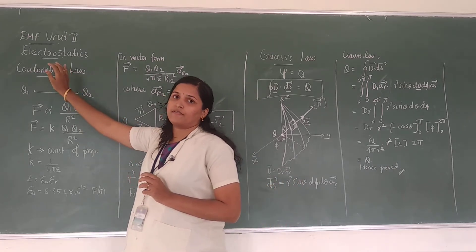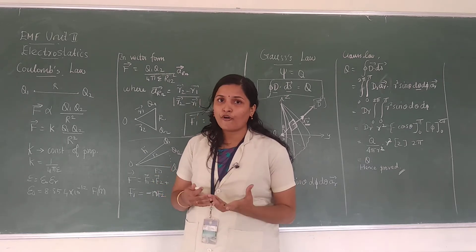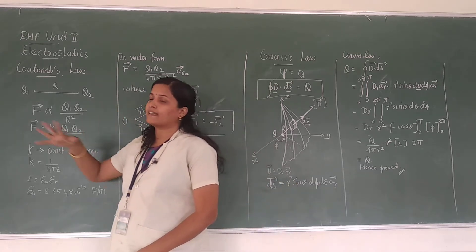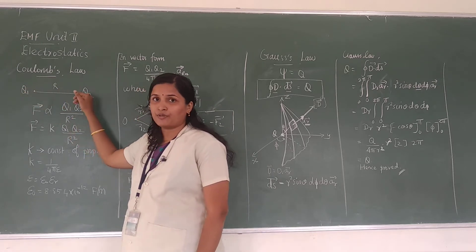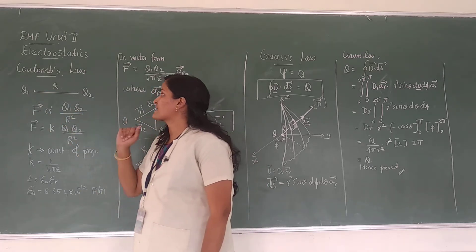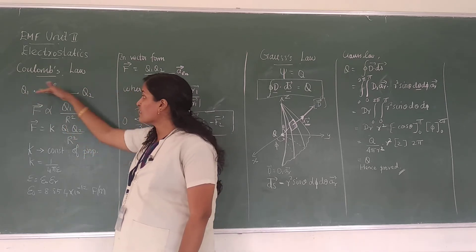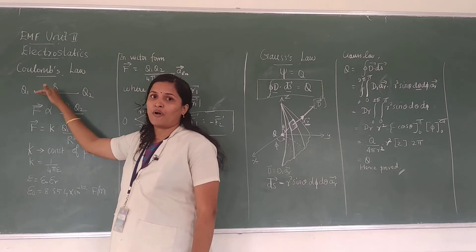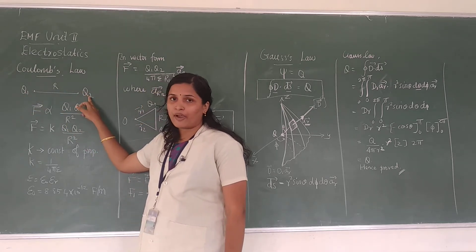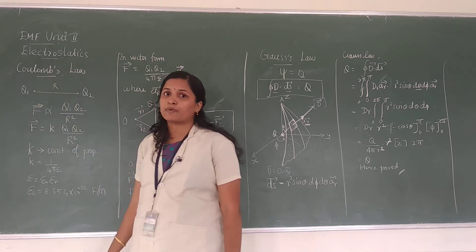First we will see Coulomb's law. Coulomb's law is the law of force acting between two point charges. Let us consider point charges Q1 and Q2 separated by a distance R. Coulomb's law states that the force acting between Q1 and Q2 will be along the line joining the two points, directly proportional to the product of the two charges, and inversely proportional to the square of the distance between them.